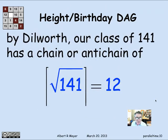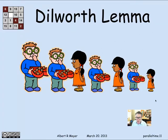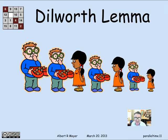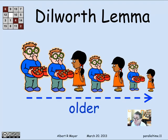According to Dilworth's lemma, in a class of 141 students, we're guaranteed a chain or anti-chain in this product DAG of size at least the square root of 141 rounded up, which is 12. What does an anti-chain mean in this height-age graph? If we line students up in order from tallest to shortest, for the set to be an anti-chain, no student to the right can be both shorter and younger than a student to the left — otherwise they'd be comparable. So sorted by height, an anti-chain requires students to be getting older as they get shorter.